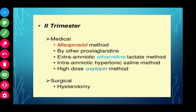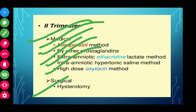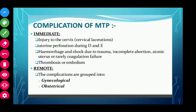In the second trimester, again medical and surgical methods are used. Medical methods include: Misoprostol or other prostaglandins, extra-amniotic ethacridine lactate method, intra-amniotic hypertonic saline method, and high-dose oxytocin method. After failure of these medical methods, you can go for the surgical method — that is hysterotomy, which is opening of the uterus. Those are all the methods of medical termination of pregnancy.